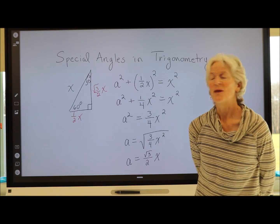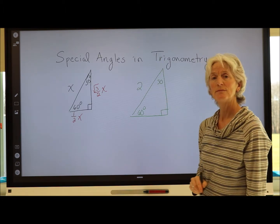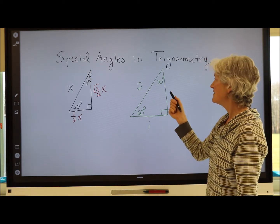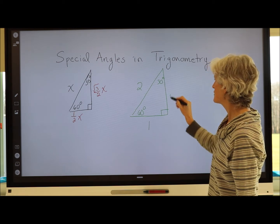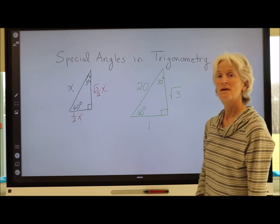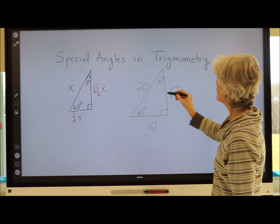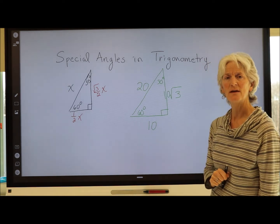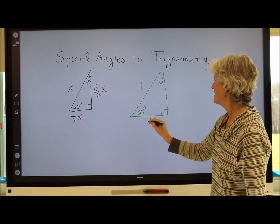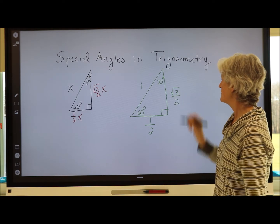Let's look at some examples. If the hypotenuse is 2, the side opposite 30° is 1, and the side opposite 60° is √3. If the hypotenuse is 20, the shortest side is 10, and the side opposite 60° is 10√3. If the hypotenuse is 1, the shortest side is 1/2, and the side opposite 60° is √3/2.